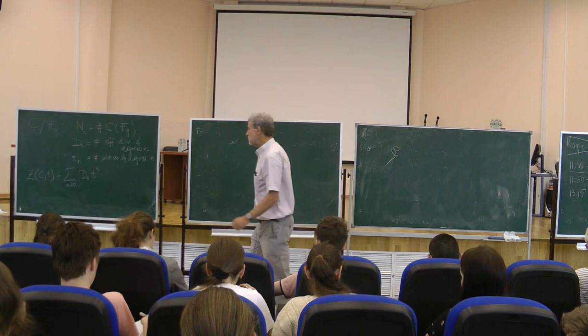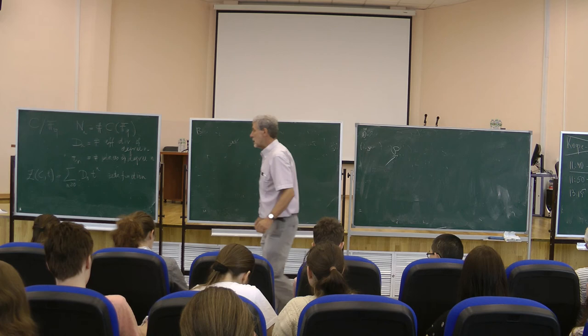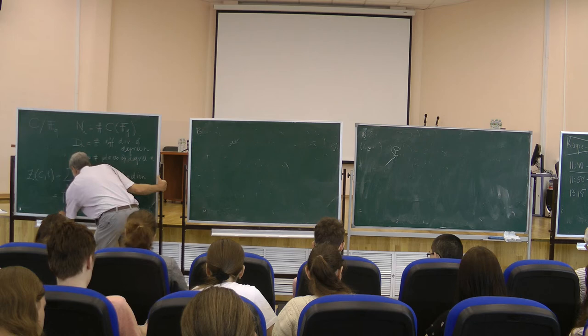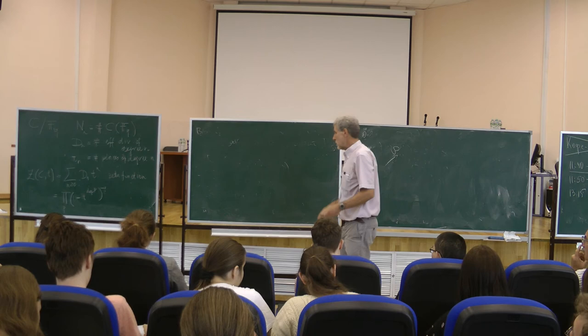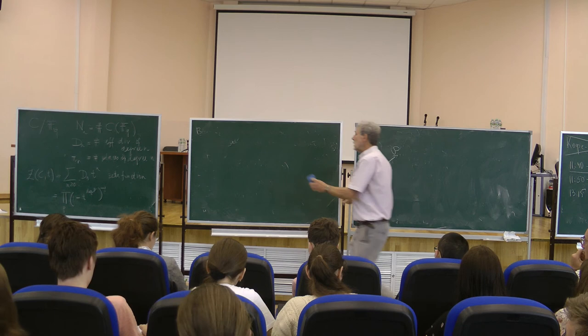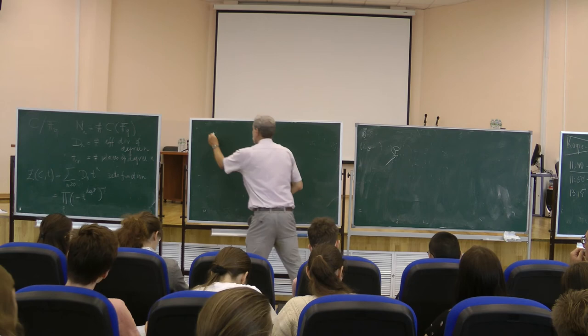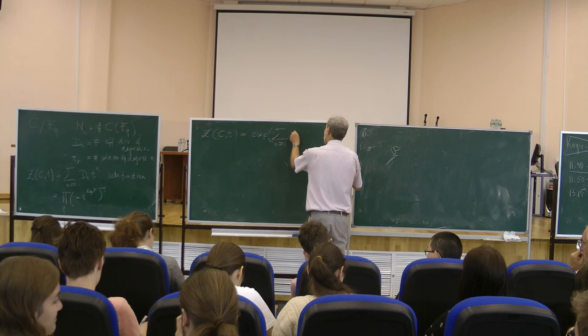That is the zeta function of our curve over F_Q, and we have seen that it allows a product over all places: (1 - t^{deg P})^{-1}, an Euler product similar to what you have seen for the Riemann zeta function. We have also seen that it can be written as exp of the sum over N ≥ 1 of N_N · t^N / N.